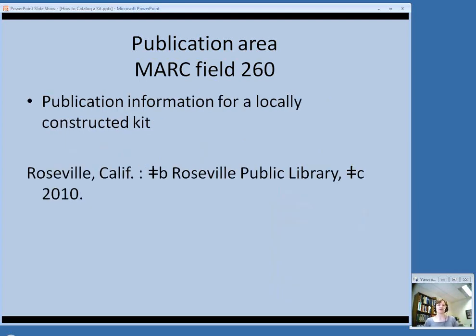A situation that might be a little different is a locally constructed kit. Many libraries put together a book and some puppets for story time or similar items not commercially produced as a kit but created in-house. The general consensus from cataloging listservs is that you can use your library as the publisher — use the library's place as place of publication, the library's name as publisher, and the date the kit was assembled as the publication date, even if some component books were published earlier.